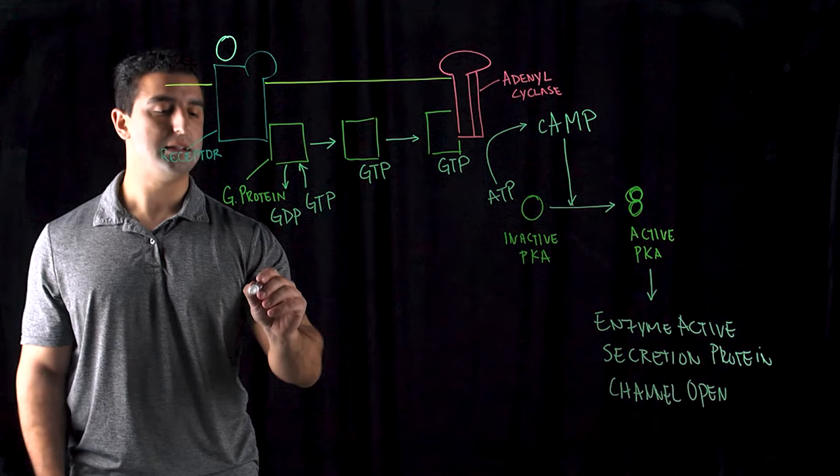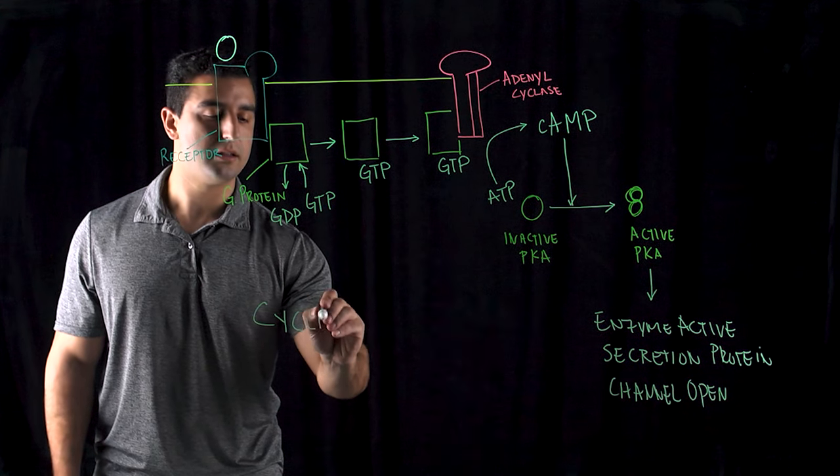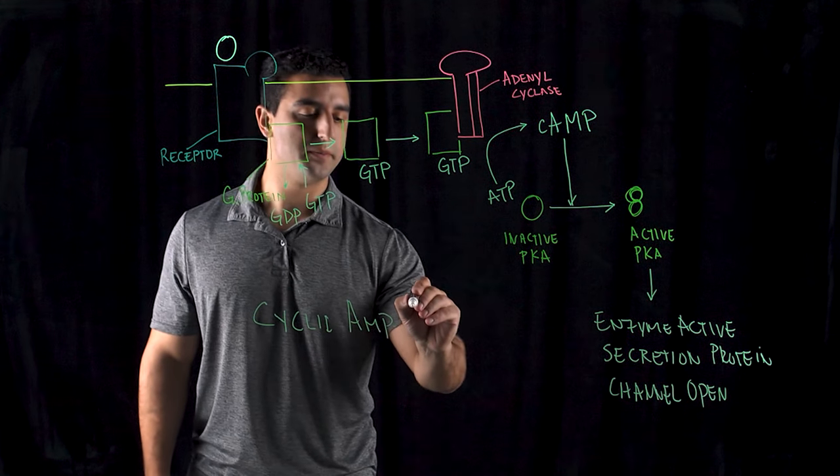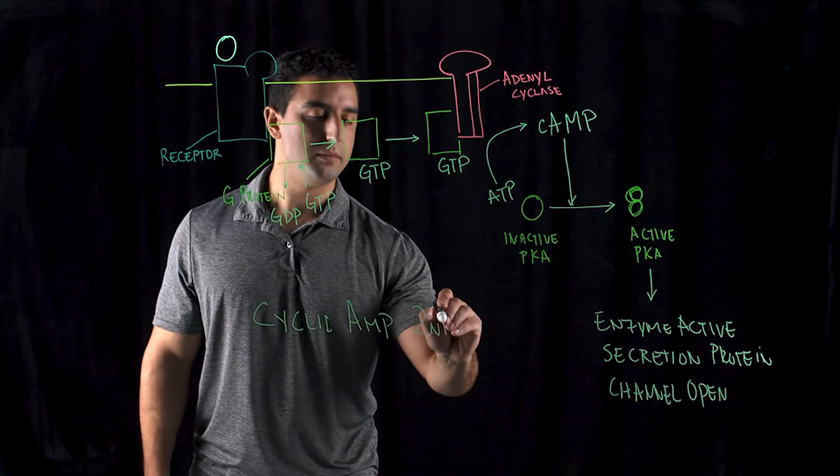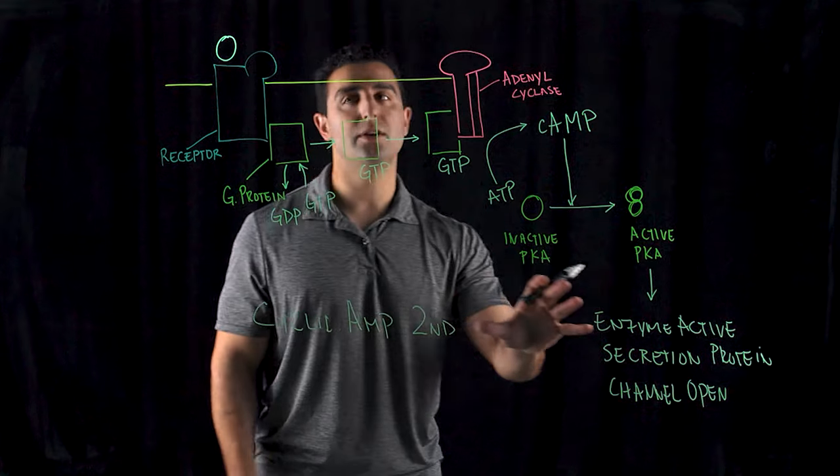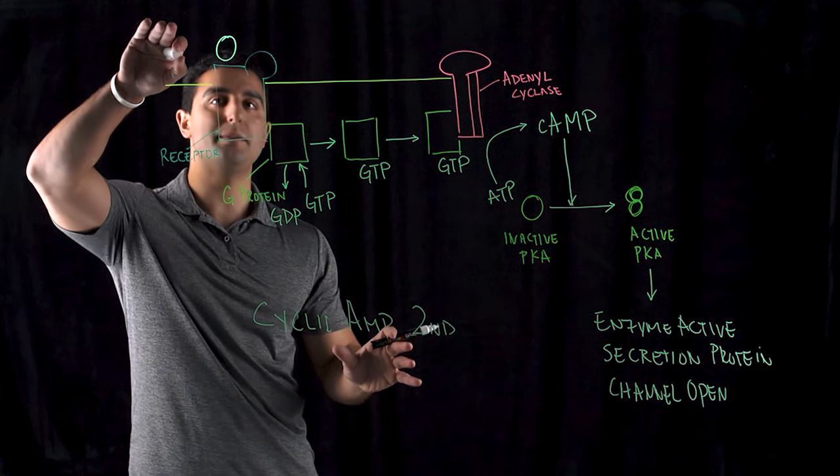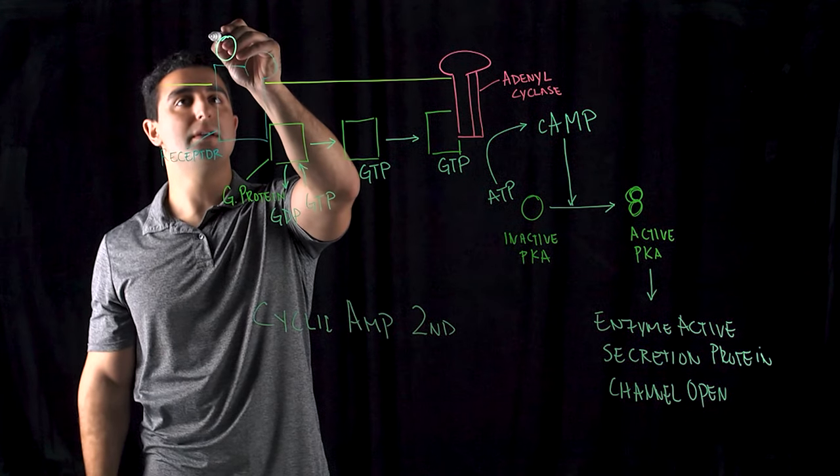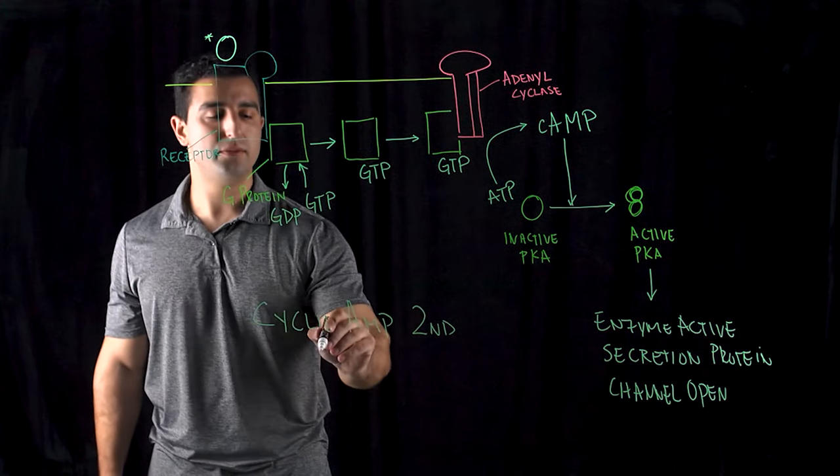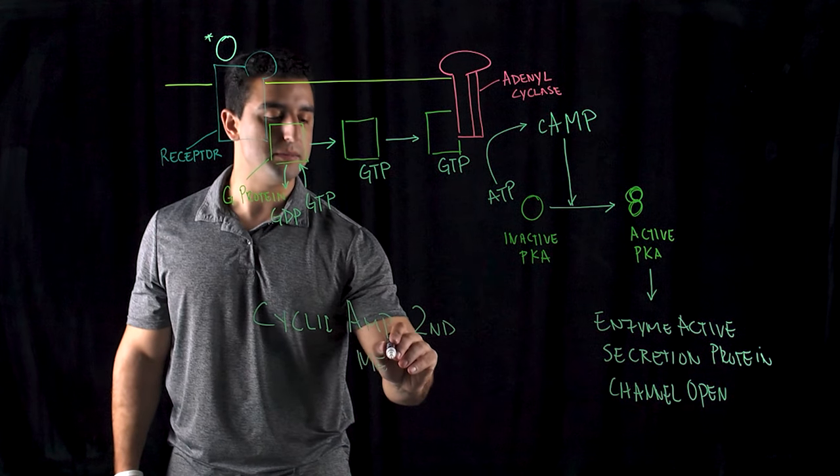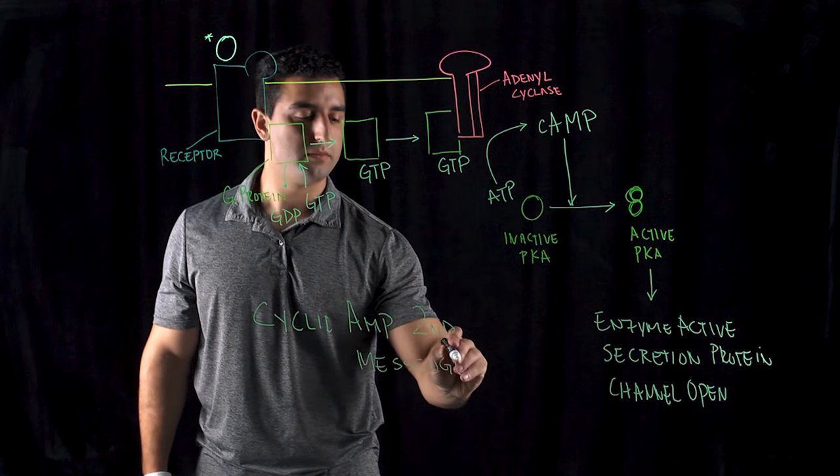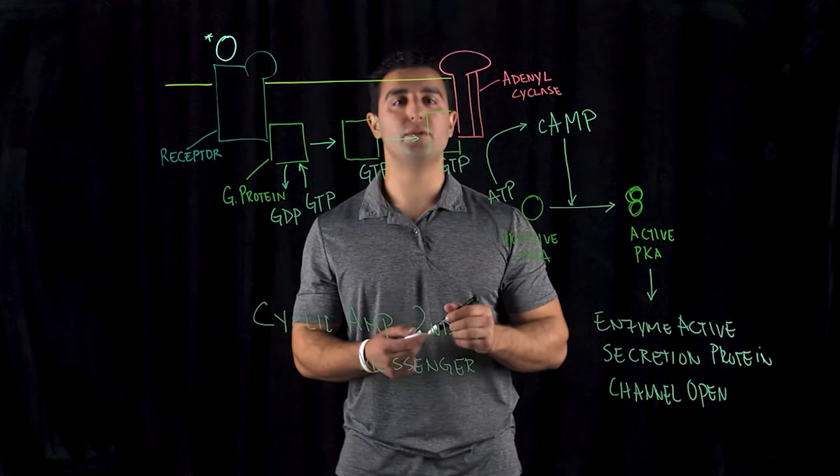This process is called the cyclic AMP secondary messenger mechanism. Remember, this is all a secondary response. The primary messenger is the epinephrine molecule we talked about from the beginning. But now it creates this downstream cascade of phenomena known as the cyclic AMP secondary messenger. This is just a very short version of it.